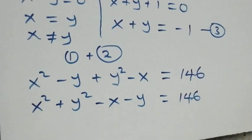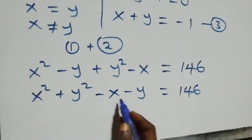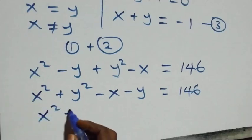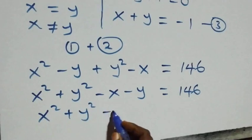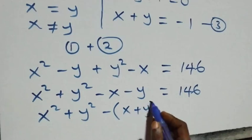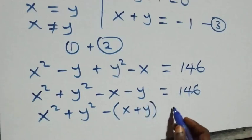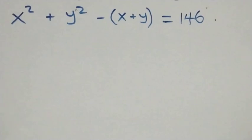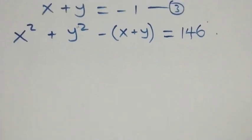From here we factor out a minus sign and rewrite as x² + y² - (x + y) = 146. From equation three we have x + y = -1, so we can replace (x + y) with -1.